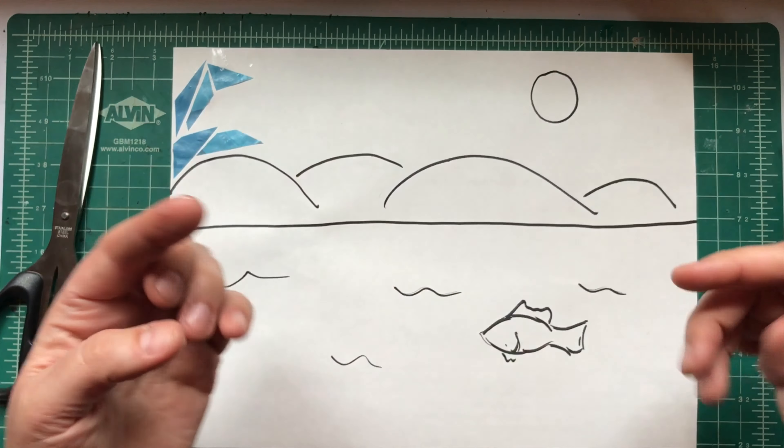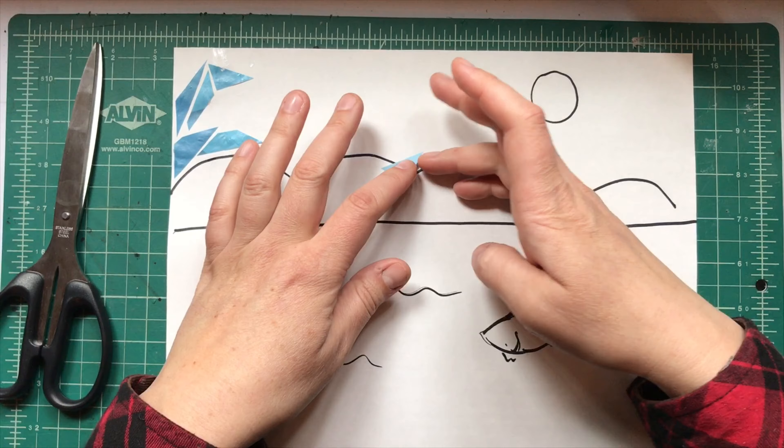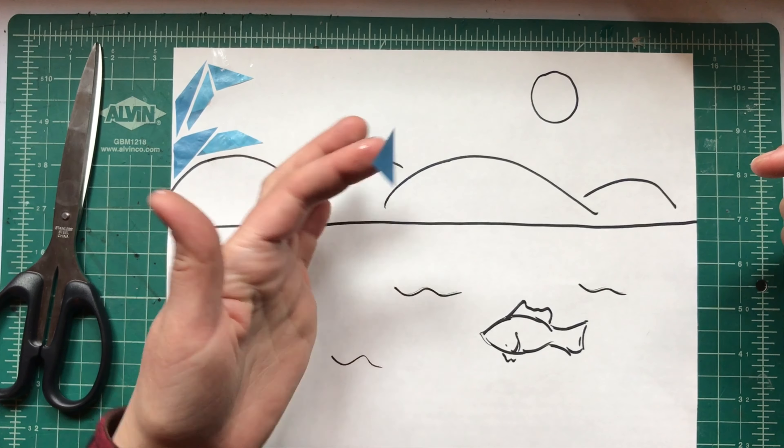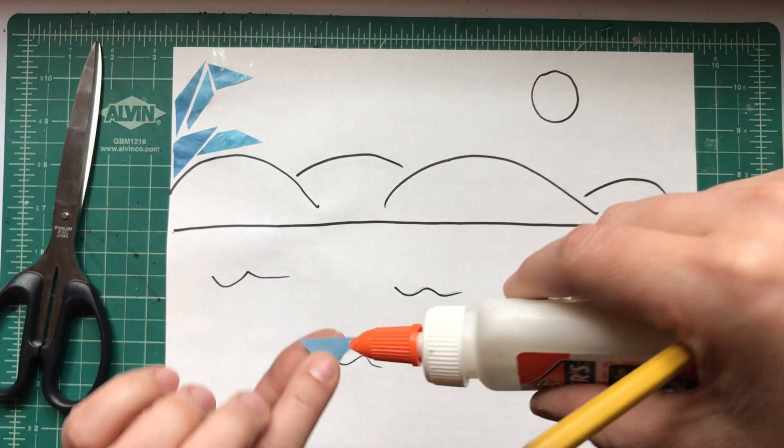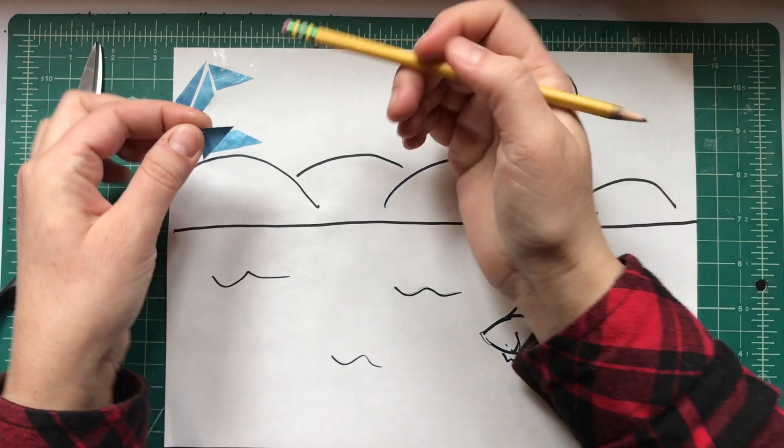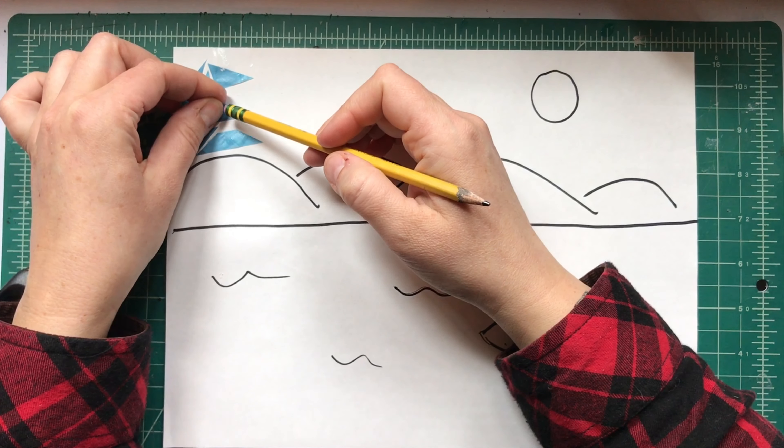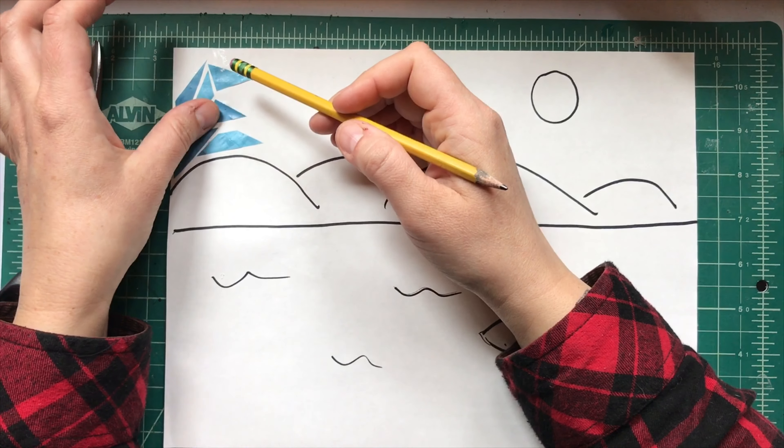A couple tips once you have glue on your fingers. It actually helps to pick up a few pieces laying all over. You can just tap it and it'll stick to your finger. If it will not come off your finger when you're trying to glue it down because your fingers are all sticky, sometimes I just take the pencil eraser and hold it down and press it down with my pencil if my fingers are too sticky.